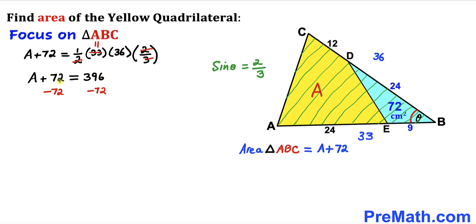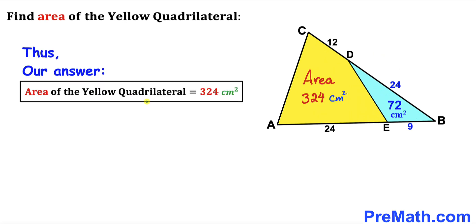Subtracting 72 from both sides to isolate A, our area A turns out to be 324. So the area of the yellow quadrilateral is 324 cm square.